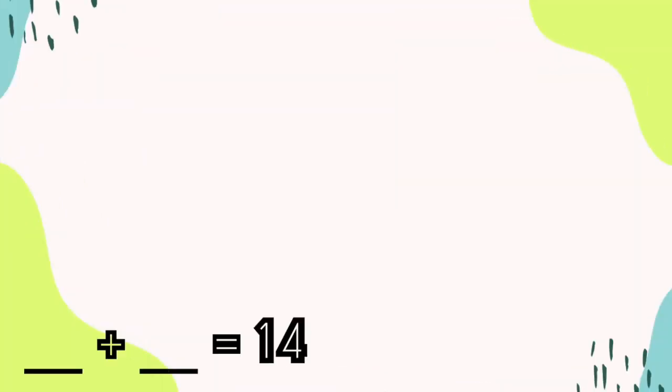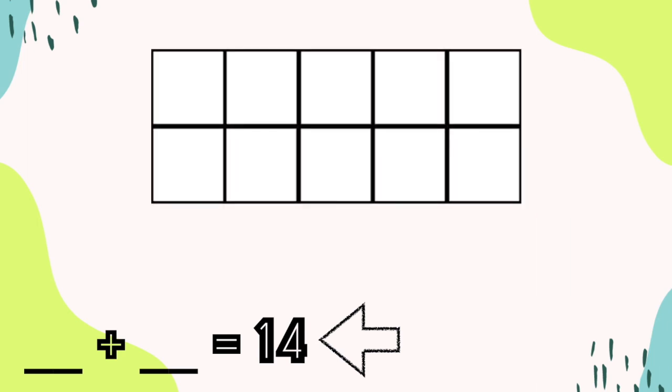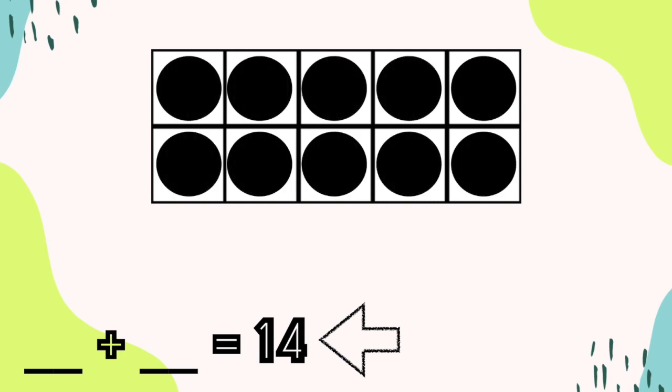Let's start by making the number 14. Remember, since we're making numbers today by starting with 10, we can use a 10 frame as a tool to help us. I'm going to start by filling up my 10 frame. This is because the number 14 is greater than 10, so I know I'm going to need at least one 10 frame to create this number.